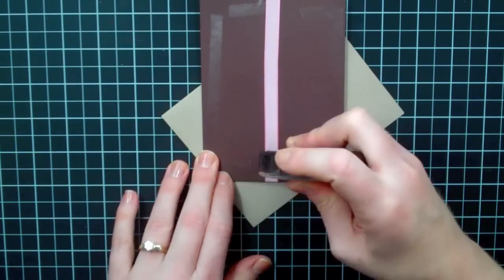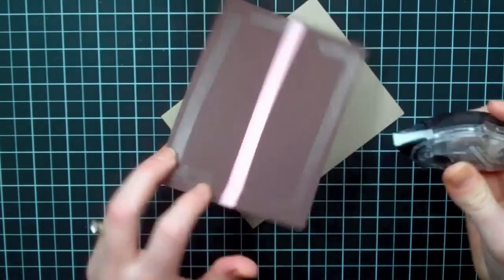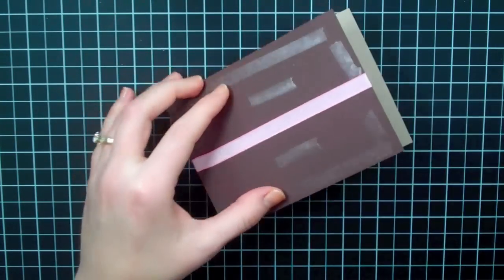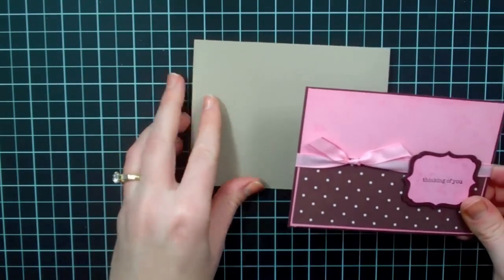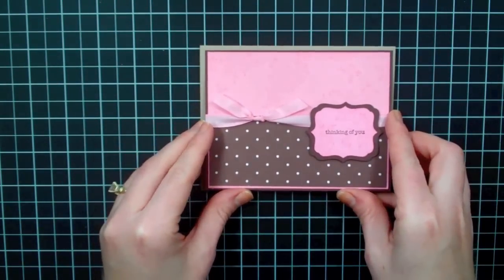Now if your Snail adhesive is cooperating, you can go straight across that ribbon, and I kind of like to do that sometimes because it helps keep the ribbon from sliding around too. So then you will just mount this right on there.